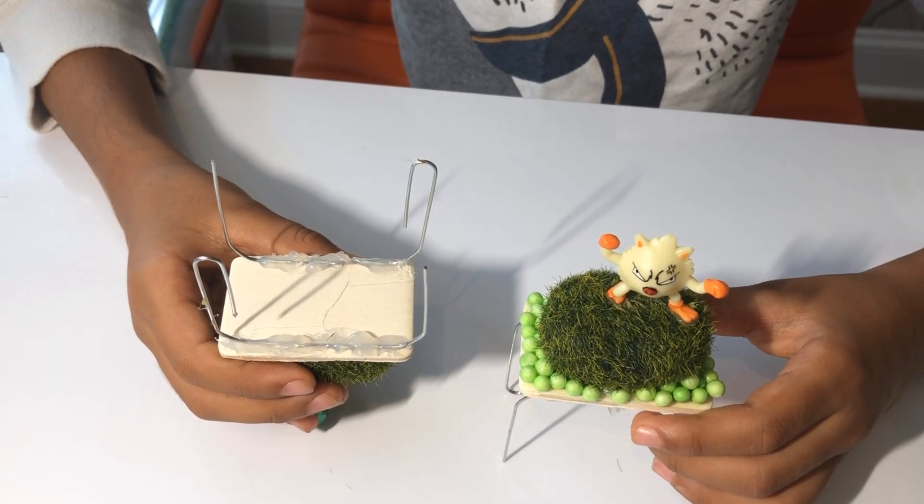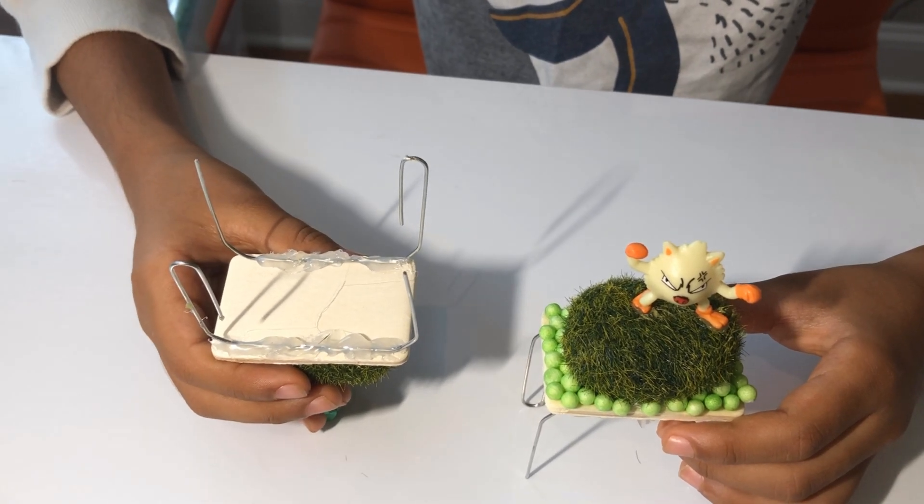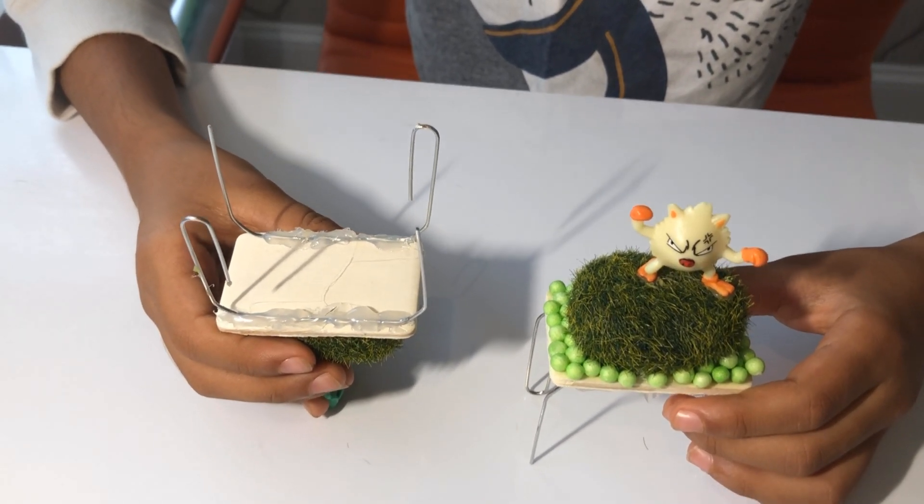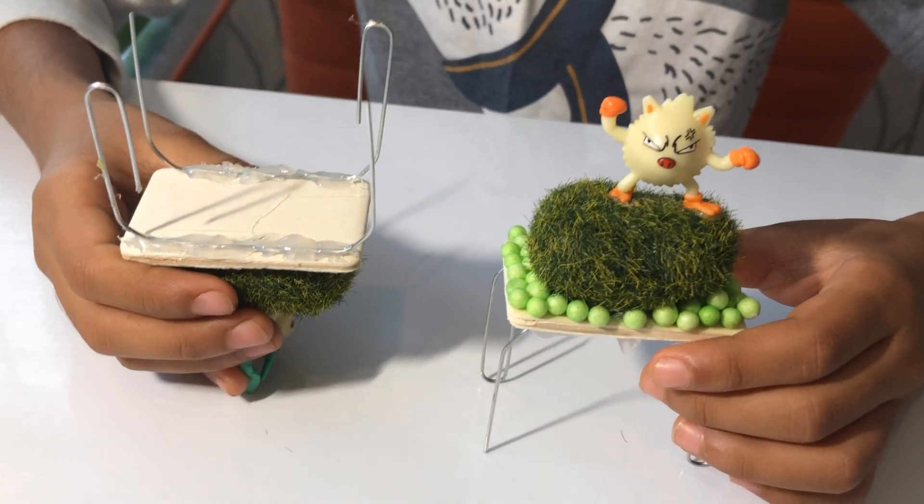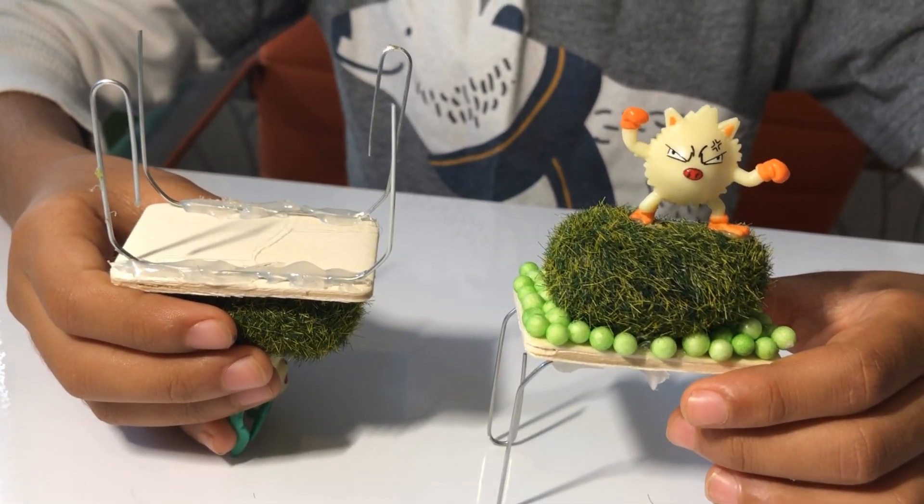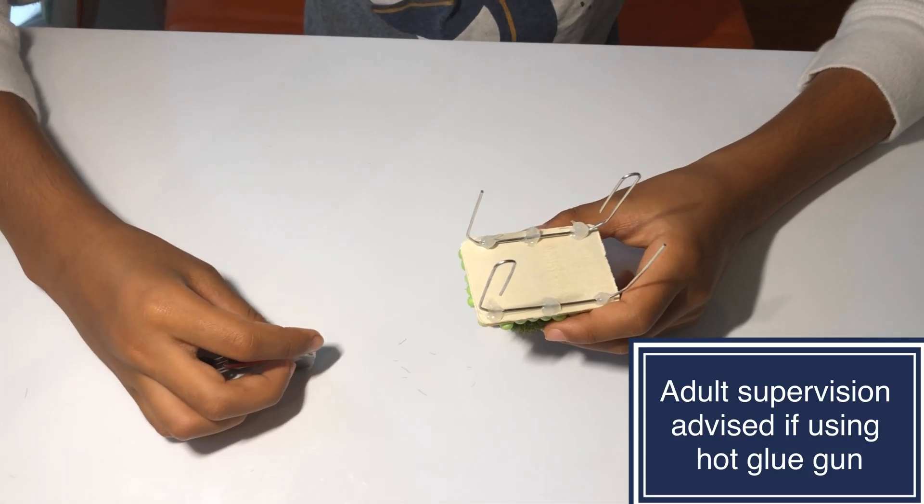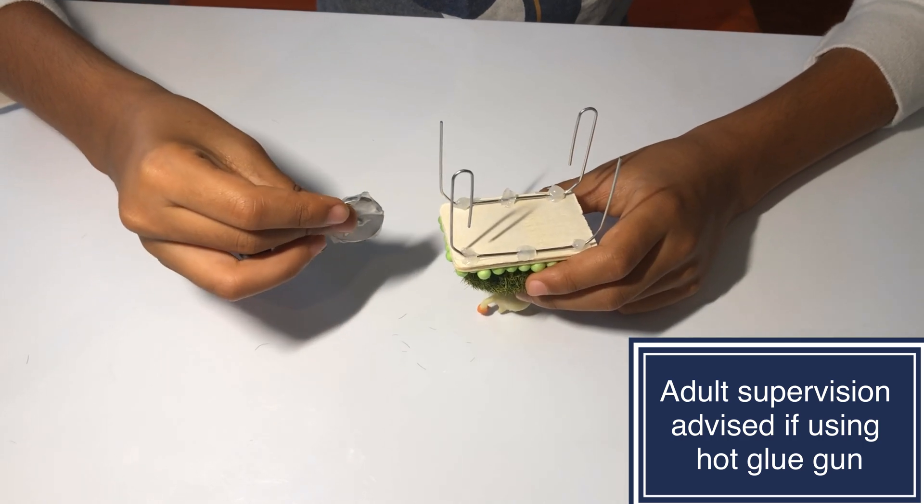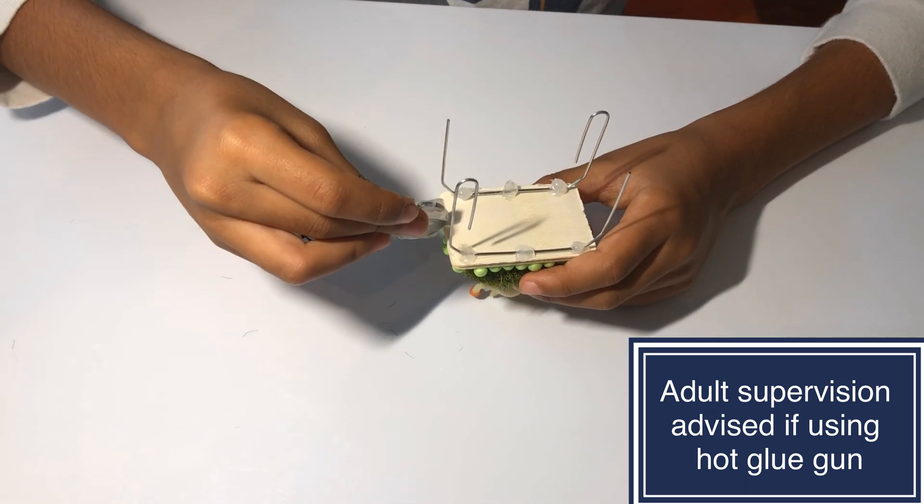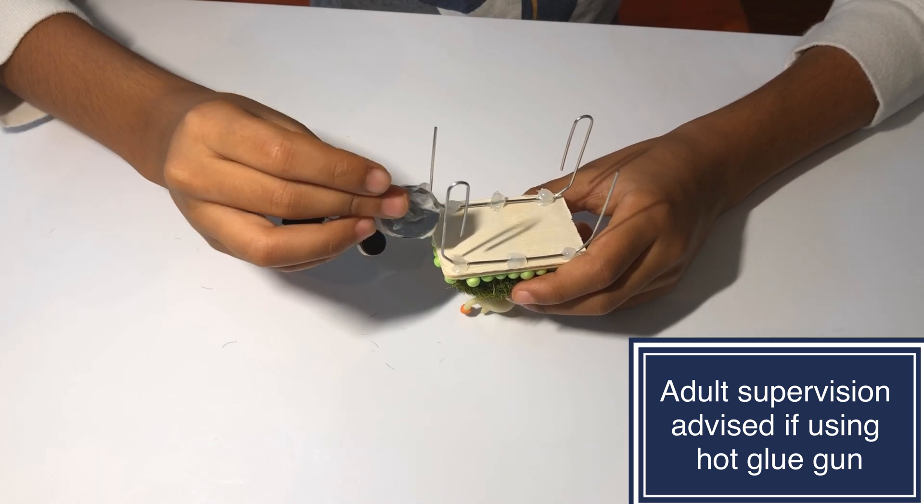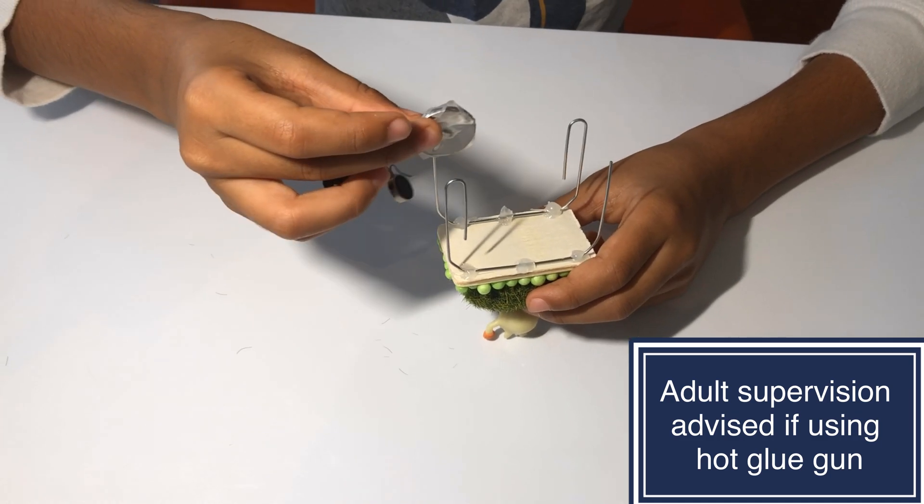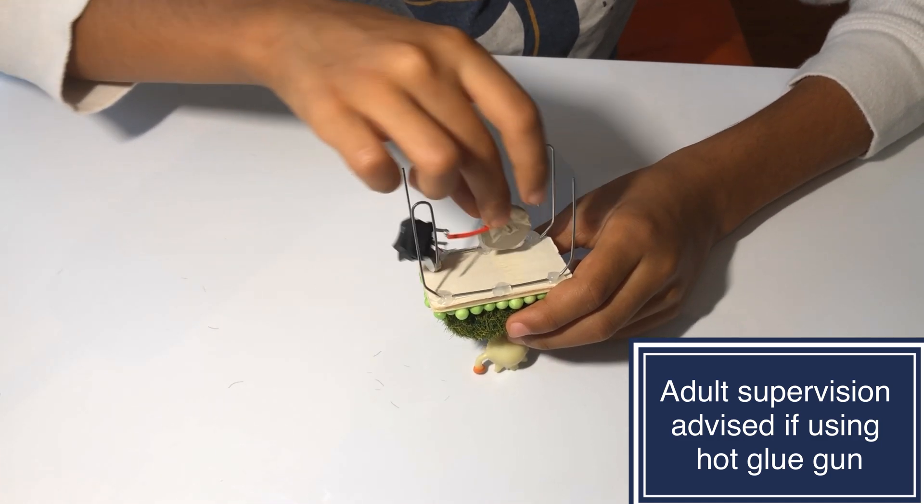Now your assembly should look like this. I stuck the assembly on the bottom of the wood chip. I do it with hot glue, but you can do it with whatever you want, like this.